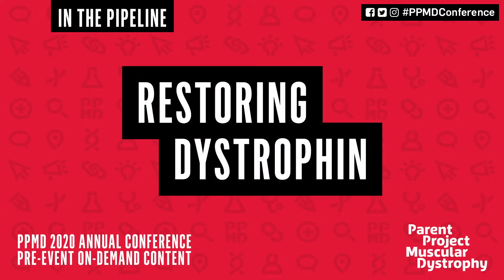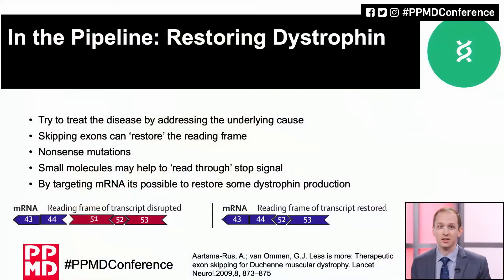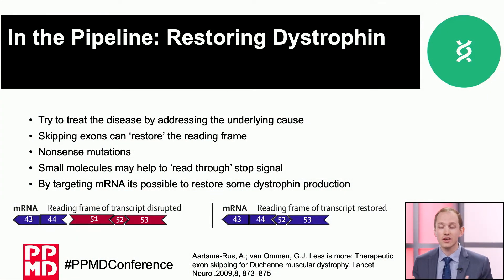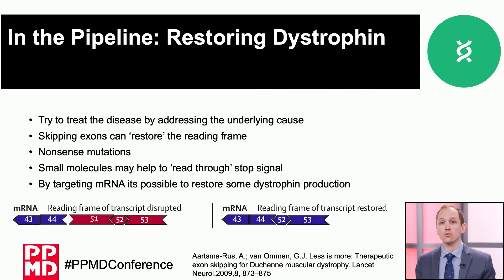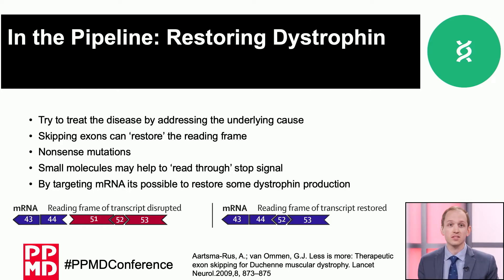This is a really important area. We talked about inflammation yesterday, and part of that discussion was the fact that the absence of dystrophin is a big contributor to the weakening of the muscle membrane. The strategies and potential therapies we're going to talk about in this session are all aimed at addressing that root problem and trying to restore production of the dystrophin protein in the cells.